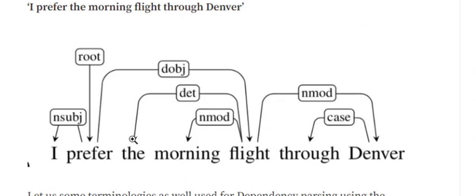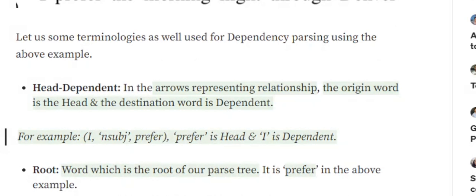An example dependency parsing tree for the sentence 'I prefer the morning flight through Denver' can be seen here. As compared to syntactic parsing trees, we now use different tags — nominal subject, direct object, determiner, modifier, case, root, etc. Let's understand the different components of a dependency parsing tree.